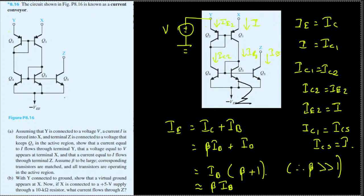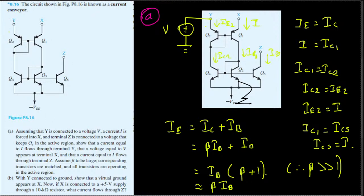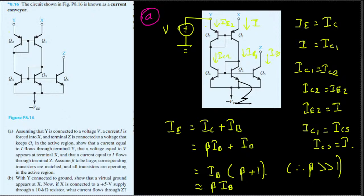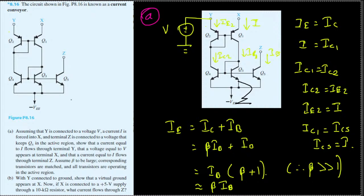This is Part B of the question - I did Part A in my previous video. In Part A, we connected voltage source V at terminal Y and saw that exact same voltage appear at X. We also applied a current I to X and saw that same current flow through terminal Y. All the currents are equal, and in the Z terminal all the currents are equal as well.